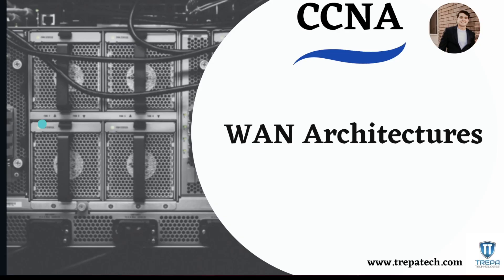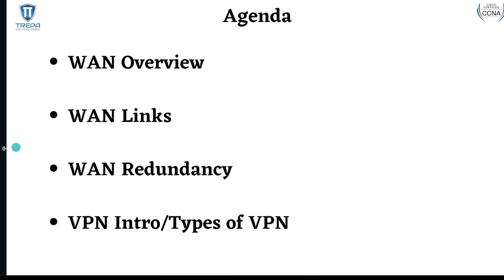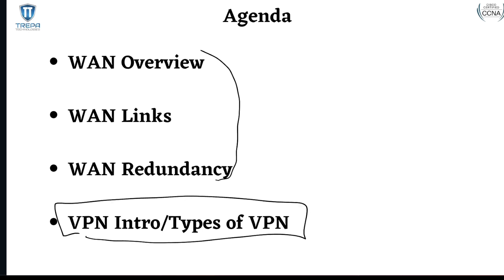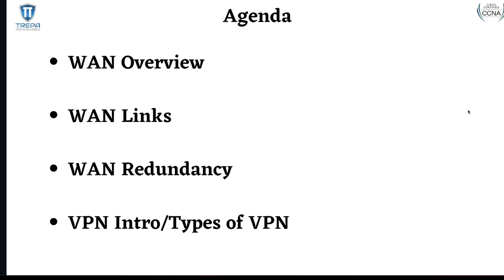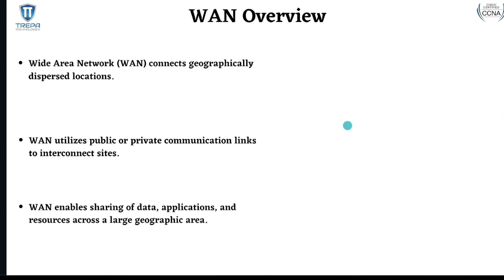So we're going to go over WAN architectures here. On the agenda: a quick overview of what the WAN is — WAN stands for Wide Area Network — then the different types of WAN links in depth, followed by WAN redundancy. WAN connects geographically dispersed locations and utilizes public or private communication links to interconnect sites. You can think of public as that broadband ISP or internet connection, and private as those dedicated leased lines or MPLS.